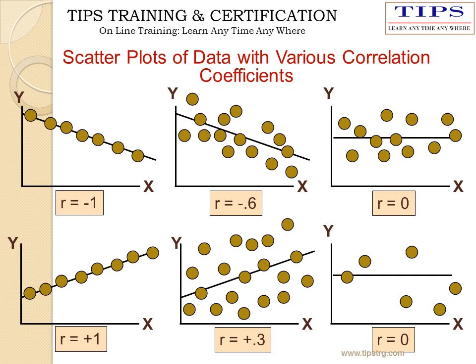Scatter diagrams are provided for different values of R. The first graph represents R equal to minus 1, that is a negative but stronger relationship. R equal to minus 0.6 represents a negative but weaker correlation. R equal to plus 0.3 represents a positive but weaker correlation. R tending to 0 represents no relationship or a weaker relationship.